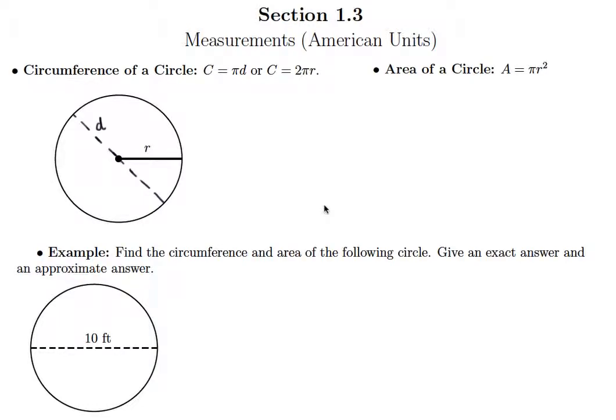In this lesson we're going to take a look at circles and two measurements that we perform with circles, and that is measuring the circumference and measuring the area. First of all, circumference is simply the perimeter of the circle, or the distance around the circle.